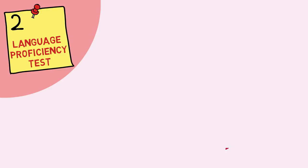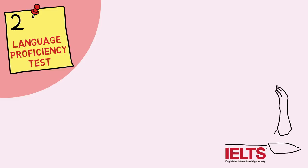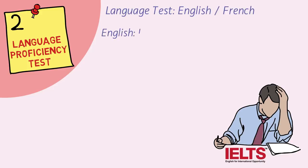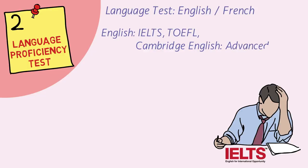The next step is your language proficiency test. You must have heard about the IELTS test, but there are other tests as well. During your research in step one, you would get to know the exact requirements of the universities, colleges, and courses, as it differs from one college and course to another. For English, the most popular option is the IELTS test — you have to go for IELTS Academic, not IELTS General. Remember: IELTS Academic is for studying, and IELTS General is for immigration. Other options include TOEFL and the Cambridge English Advanced test.